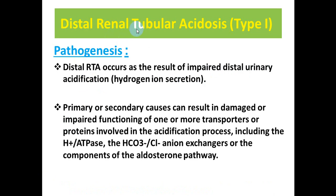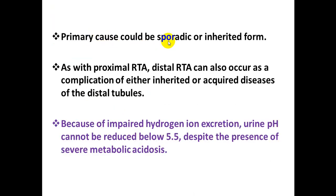Distal renal tubular acidosis is type 1 RTA. It results from impaired hydrogen ion excretion in the distal convoluted tubules. The causes may be primary or secondary — sporadic or inherited — and can result from complications of either inherited or acquired diseases of the distal convoluted tubules. Because of impaired hydrogen ion excretion, the urine pH cannot be reduced below 5.5, even in the presence of severe metabolic acidosis. This is important for differentiating distal type from proximal type.